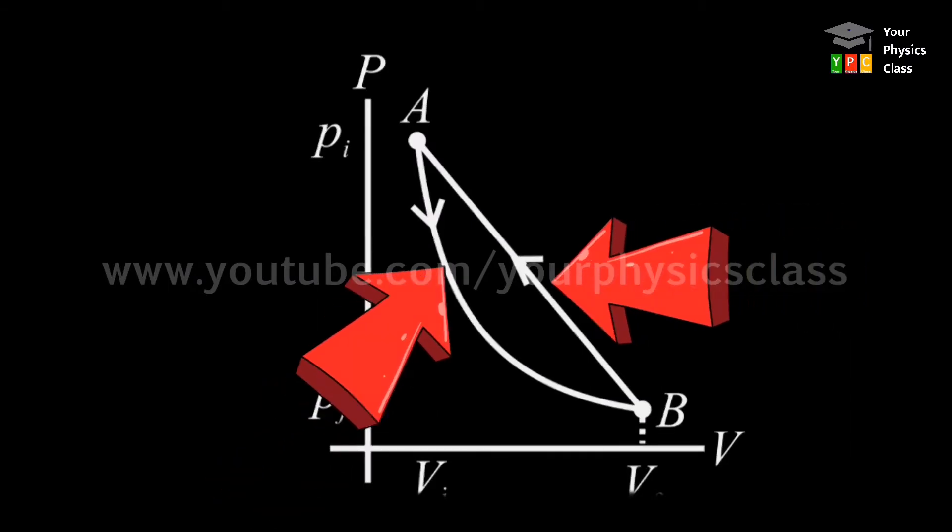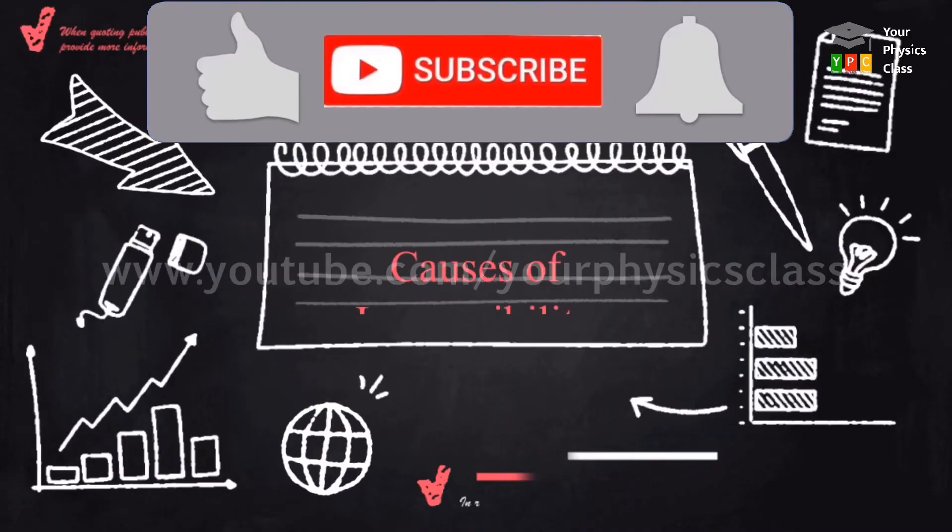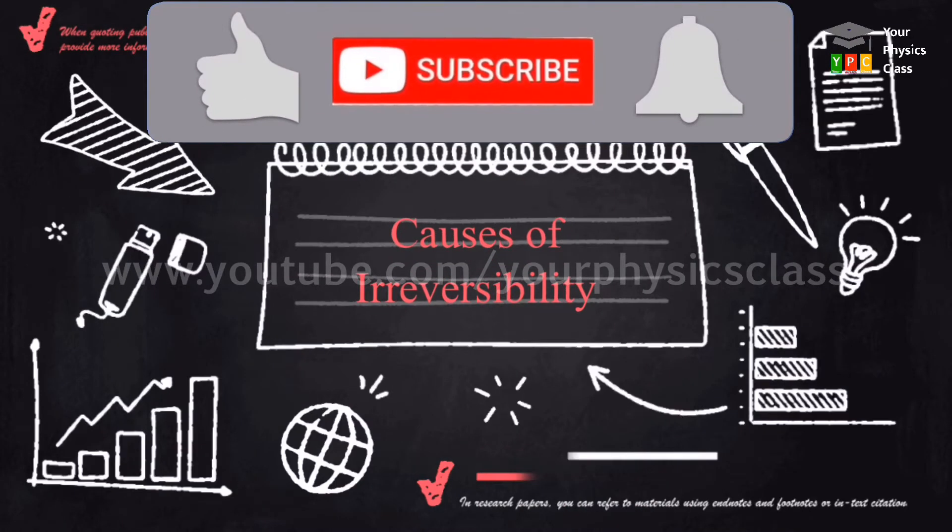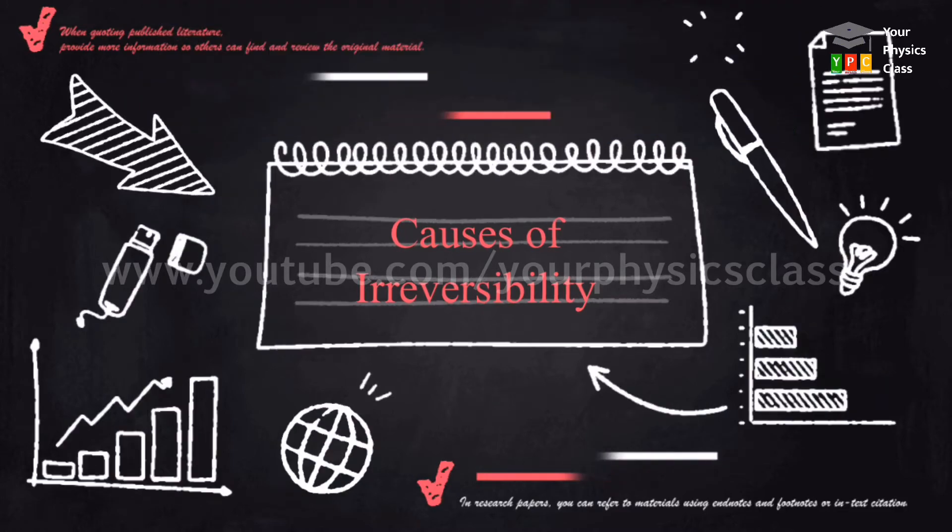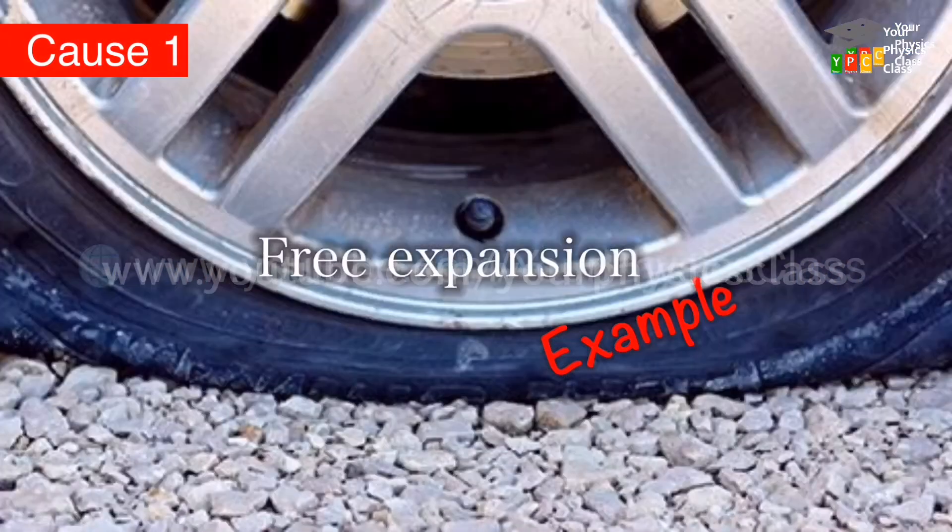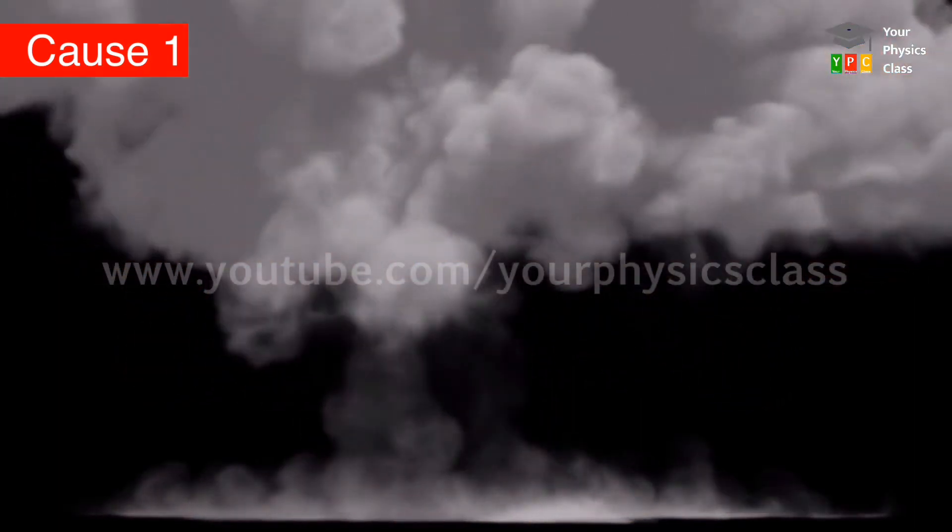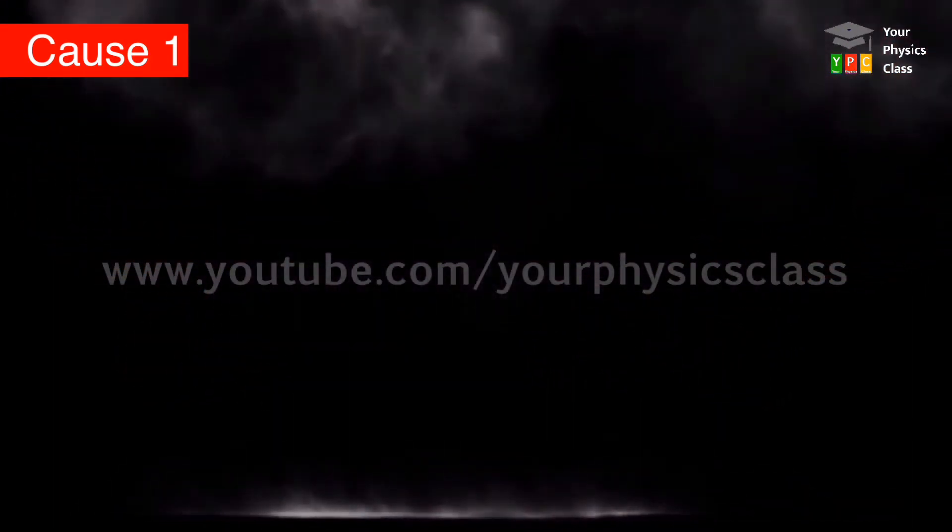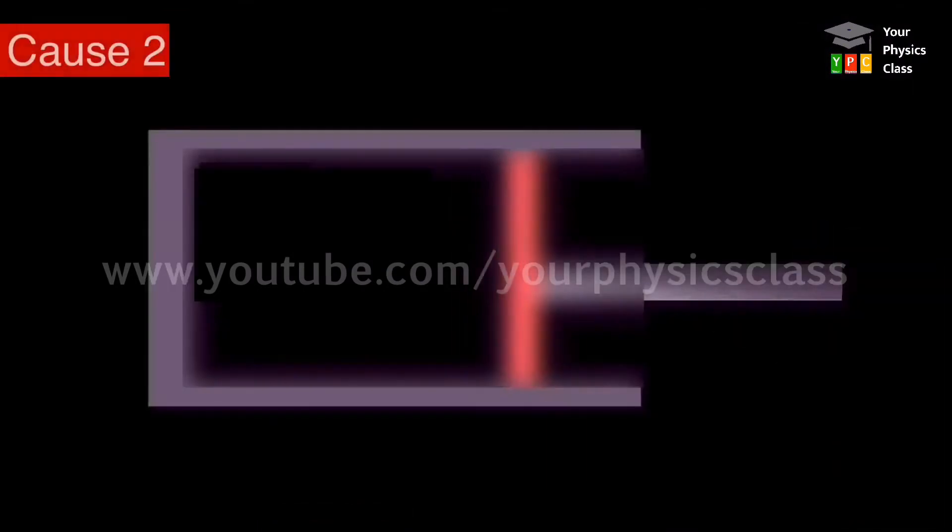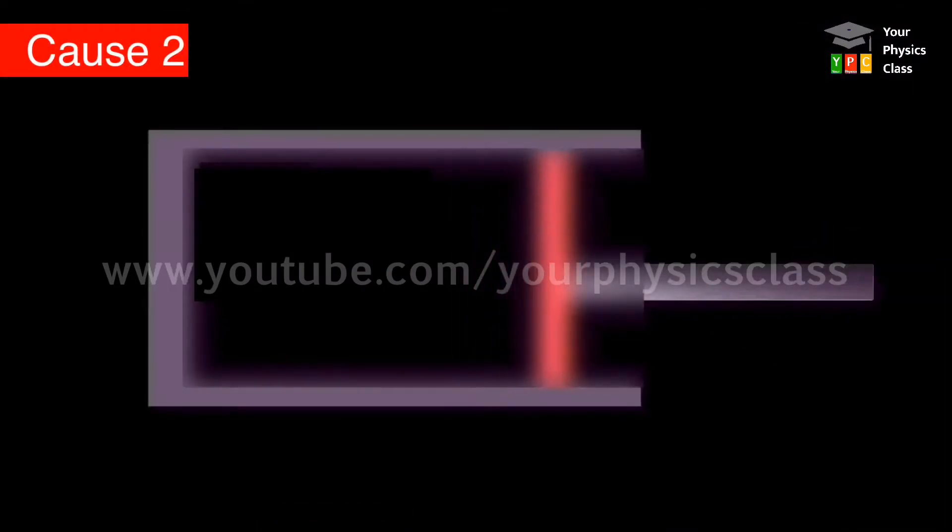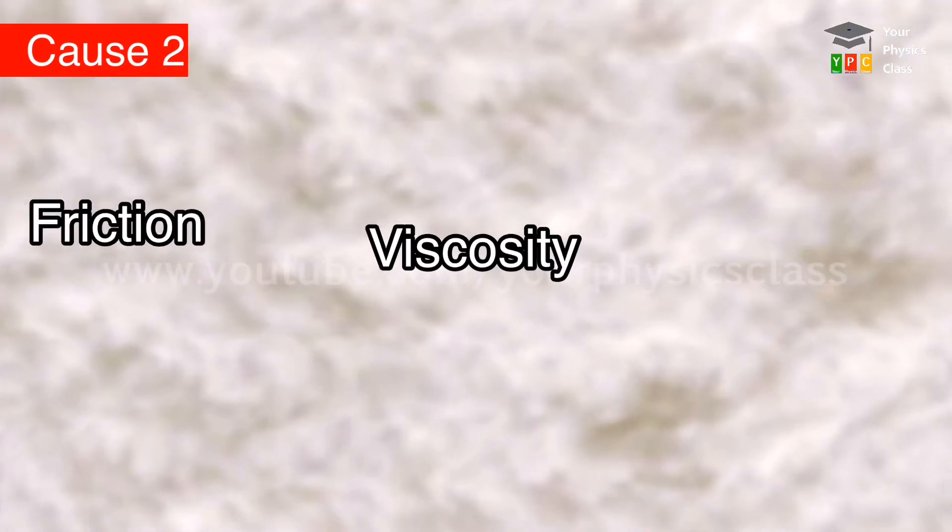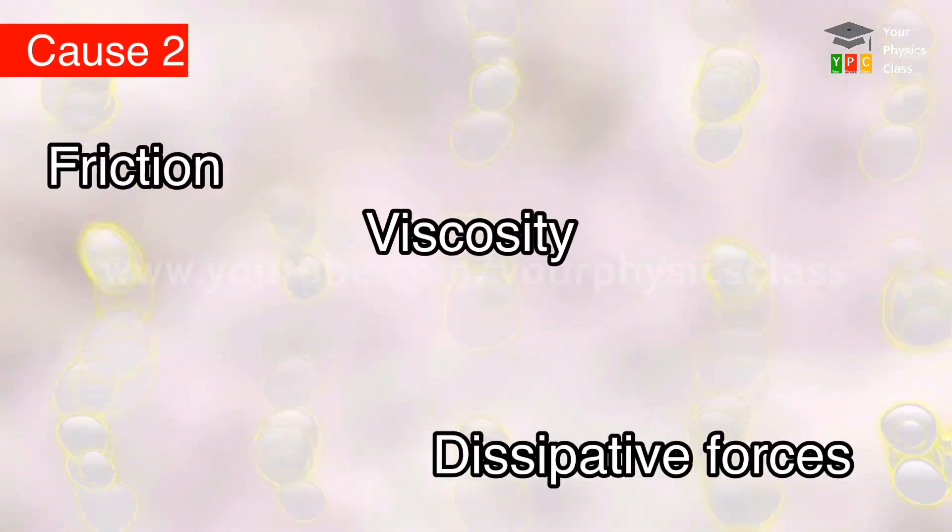Different paths indicate that system does not retrace same path when the process is reversed. Let us now see causes of irreversibility. Many processes such as free expansion or an explosive chemical reaction take the system to non-equilibrium state. And the second cause is most processes involve friction, viscosity, and some other dissipative forces.